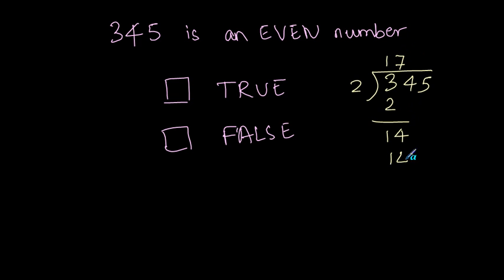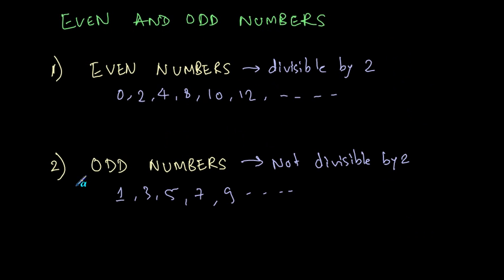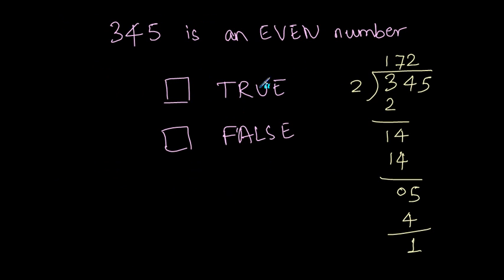2 sevens are 14. Now 14 minus 14 is 0. 5 comes down. 2 twos are 4, and there is 1. And so 345 is not divisible by 2, and the numbers which are not divisible by 2 are odd numbers. So the answer is false. 345 is not an even number.